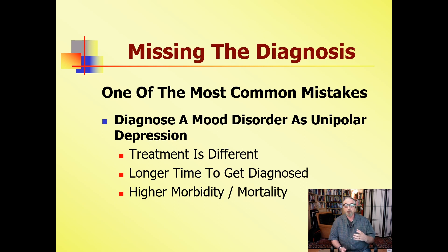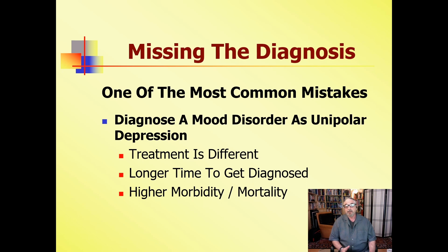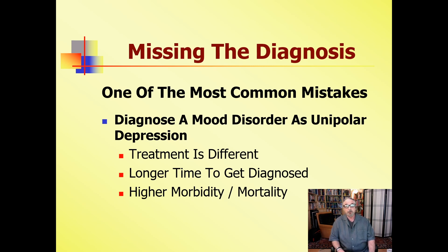Unfortunately, one of the most common mistakes is diagnosing someone with a mood disorder as unipolar depression. The treatments are very different. If you have a mood disorder, it can be up to 10 years before you get diagnosed — they say 10 years and 3.3 psychiatrists. If you have classic manic depressive illness, you may be mistakenly diagnosed as having depression for three, four, or five years. If you have unstable mood disorders where you never have a manic or hypomanic episode, maybe 10 years before you get diagnosed. The result is much higher morbidity and mortality in these groups.